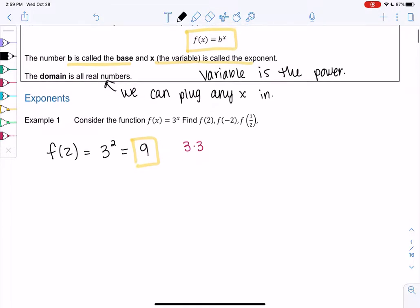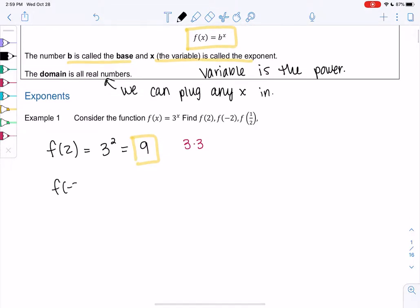How about f of negative 2? Negative powers tell us to actually flip it or take the reciprocal. So we're going to get 1 over 3 squared instead. That would be 1 ninth. It would be 1 squared over 3 squared, or 1 third times 1 third.